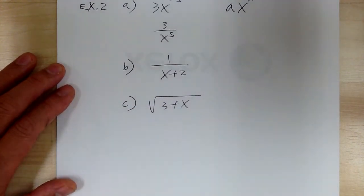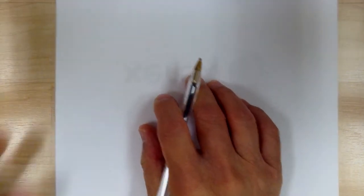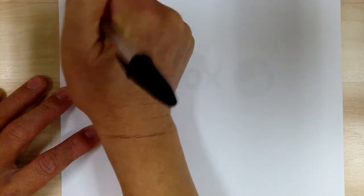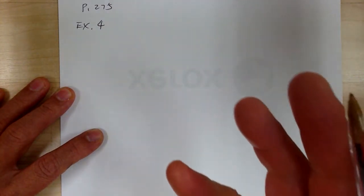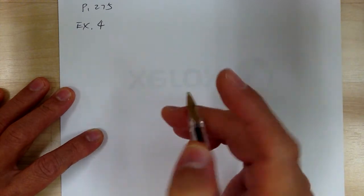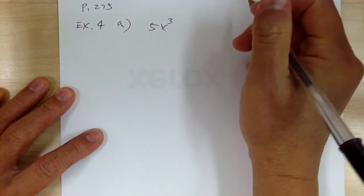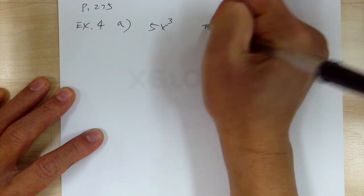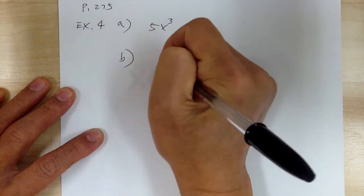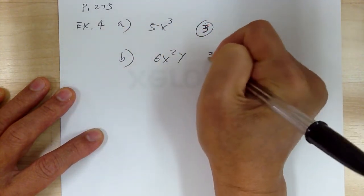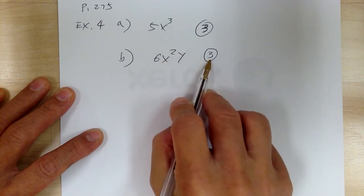The next thing we need to do is figure out the degree. Degree basically means the exponent. So for example 4, A: you've got 5X³. This is the third degree because the exponent is 3. B: 6X²Y. This is also third degree because you get 2 from the X and 1 from the Y — both are to the first power — so total of 3.